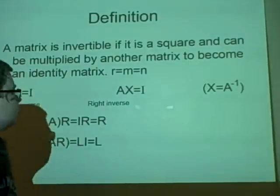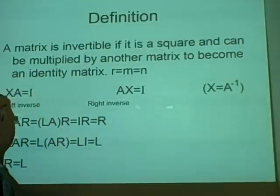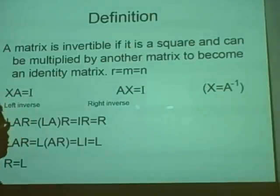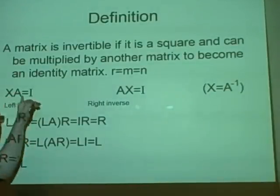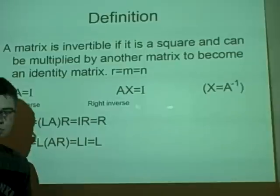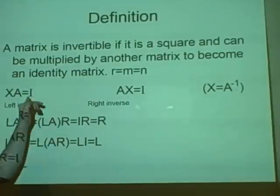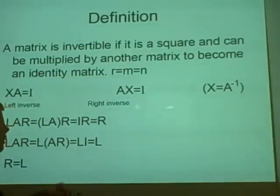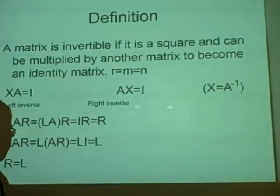Now, we have XA — X in our case being the inverse and A being our matrix — and this will equal the identity matrix. This is known as the left inverse.